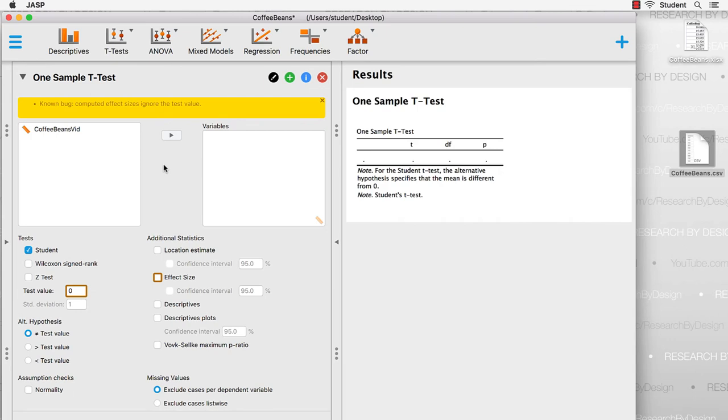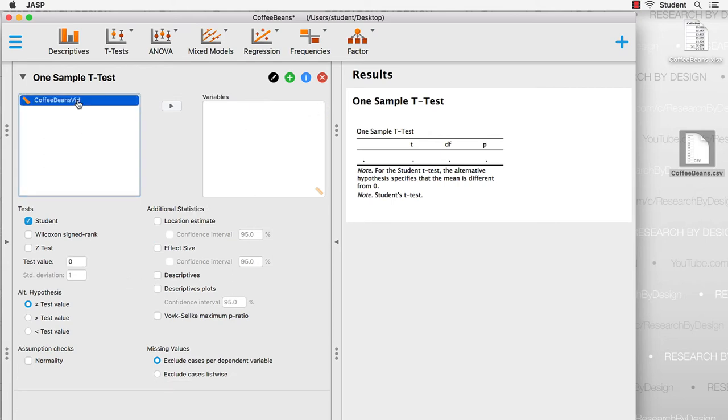There is a known bug in the t-test right now. It'll be fixed eventually, but it has to do with the effect size. If we ask for an effect size right now, it ignores the test value. It's going to give us the wrong effect size. So for now, we'll just skip the effect size. I'm going to close out this notification, and then move my data into the variables box.